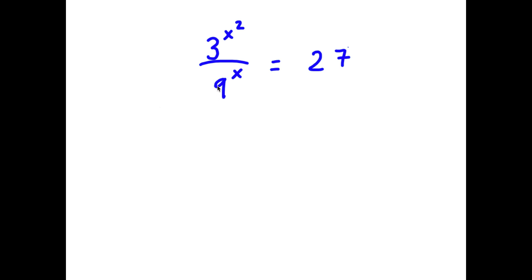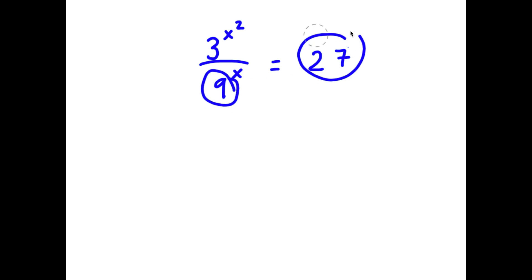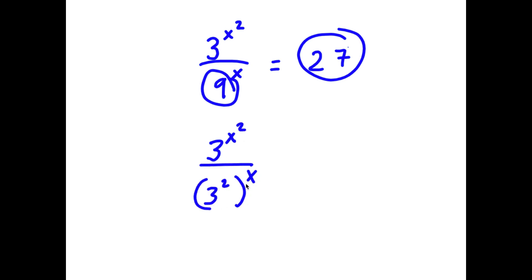In this problem, I have 3 to the power of x squared over 9 to the power of x is equal to 27. I'm first going to start by rewriting 9 as 3 squared and 27 as 3 cubed. So now I have 3 to the power of x squared over 3 squared to the power of x is equal to 3 to the power of 3.